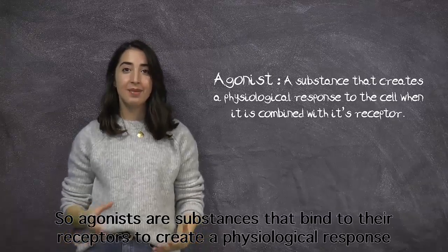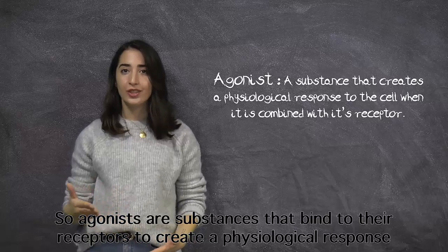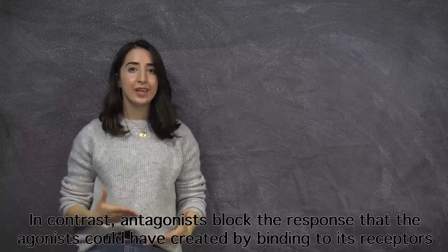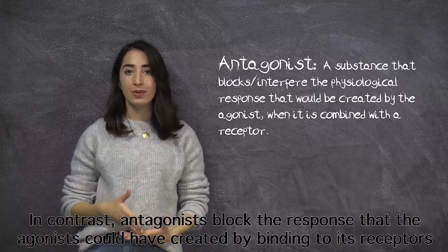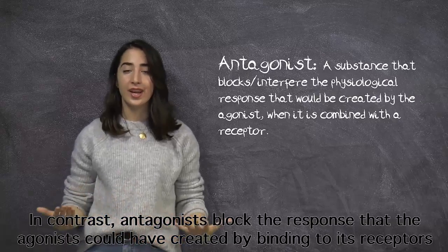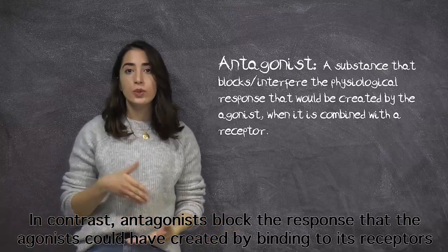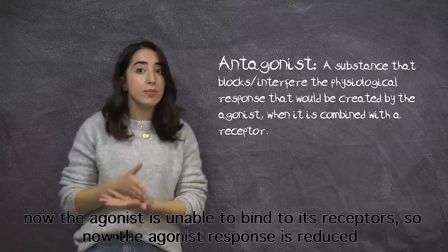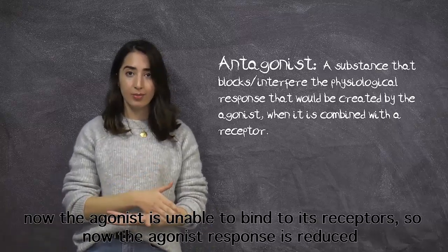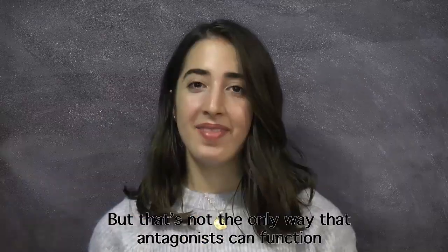Agonists are substances that bind to the receptor to create a physiological response. In contrast, antagonists block the response that agonists could have created by binding to its receptor, so the agonist is unable to bind to its receptor and the agonist response is reduced.